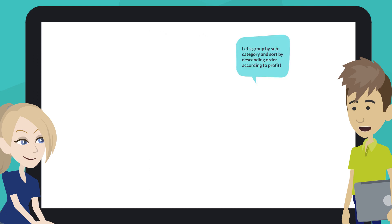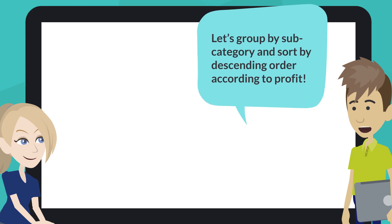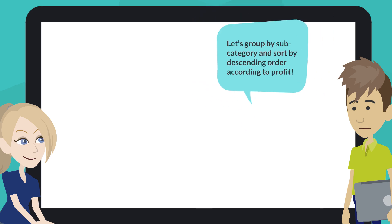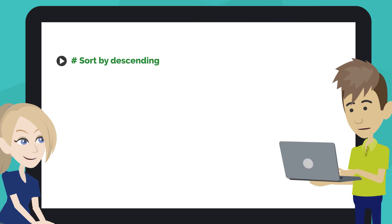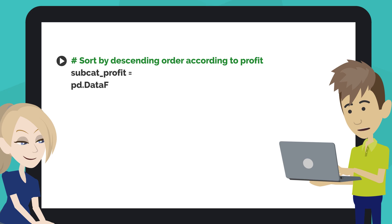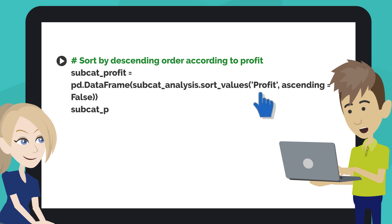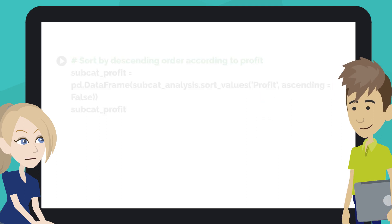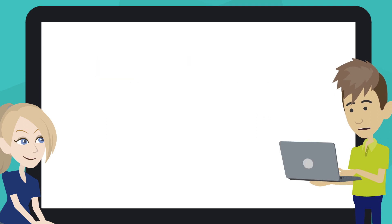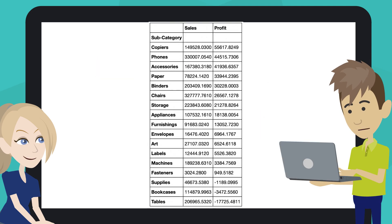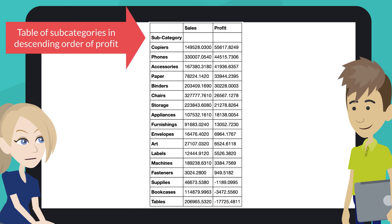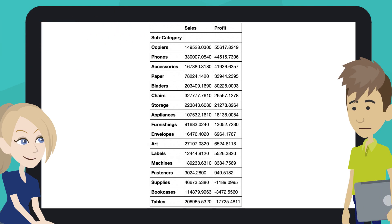Then let's group by subcategory and sort by descending order according to profit. Type the code like this into the next code cell of your notebook. We can use the same code above, replacing sales with profit. Click on the play button or hit Shift+Enter. We can now see a table of subcategories in descending order of profit.